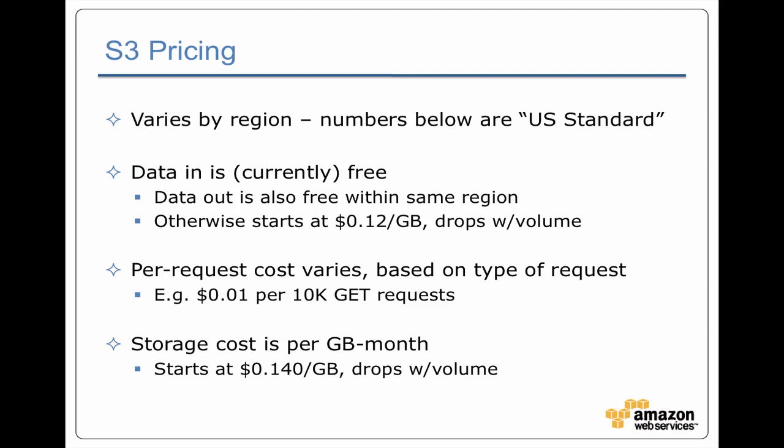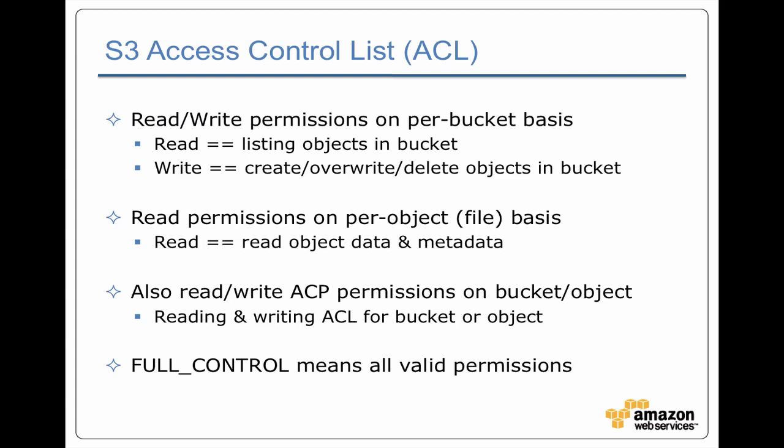S3, similar to the file system on your laptop, gives you control over who can do what to things in the file system, handled via access control lists. There are two different types of access controls that S3 enforces: one at the bucket level and one at the object or file level. At the bucket level, you have read and write access — read means you can list everything inside the bucket, and write means you can create, update, and delete files in that bucket. At the file level, you have read permission, meaning you can read the file, but write and delete are controlled by the bucket.